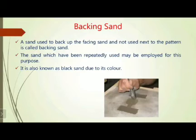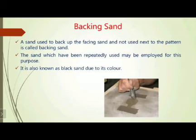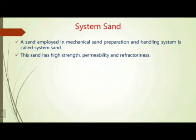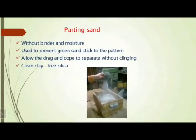We use facing sand first, then the next layer is backing sand — to withstand refractoriness and enhance all the properties of the molding sand. The backing sand color is black. System sand is the sand employed in mechanical sand preparation and handling systems — it has high strength, permeability, and refractory properties, and it is economical.